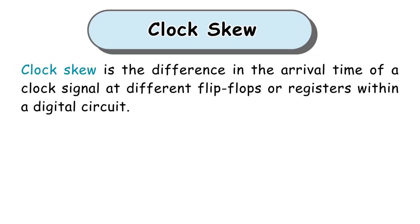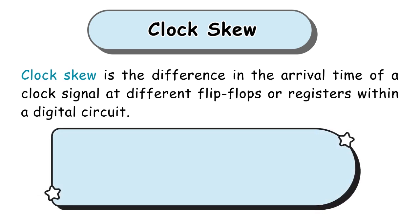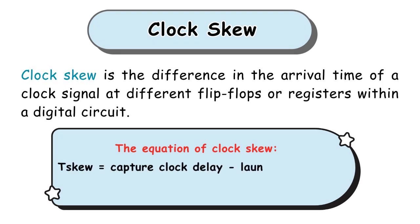Clock skew is the difference in the arrival time of a clock signal at different flip-flops or registers within a digital circuit. As shown, the clock signal at flip-flop 1 arrives at different time than the clock signal at flip-flop 2. This difference in the arrival time of the two clock signals is the clock skew. So, the equation of clock skew will be t_skew equals capture clock delay minus launch clock delay.